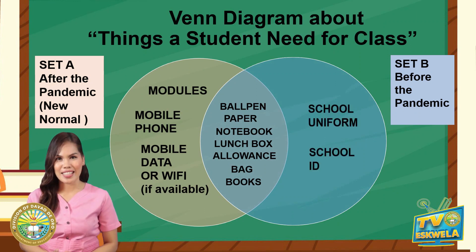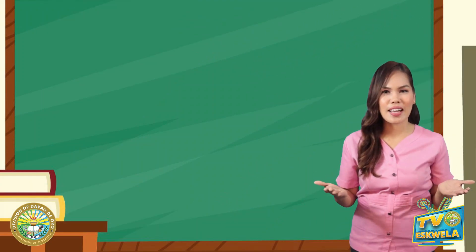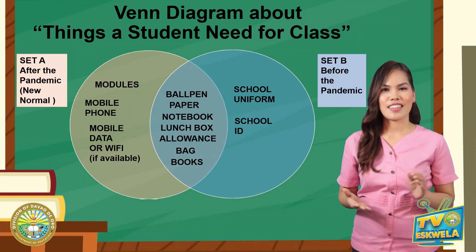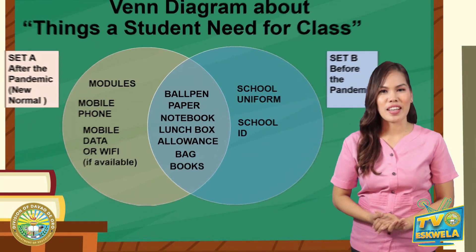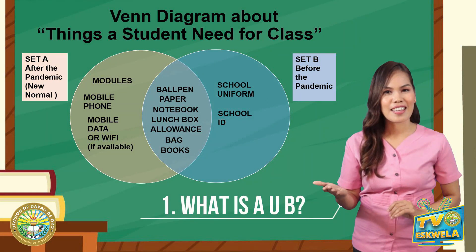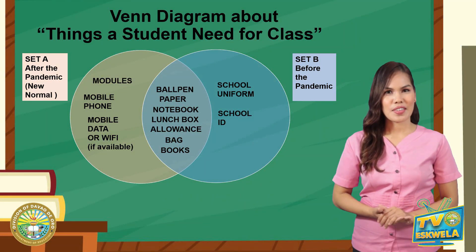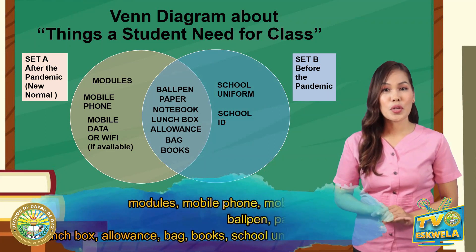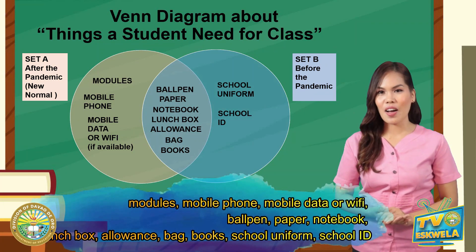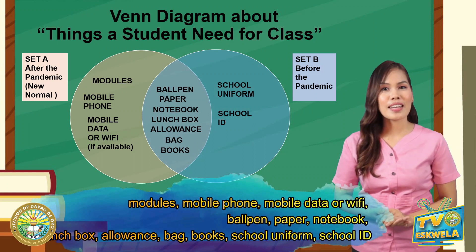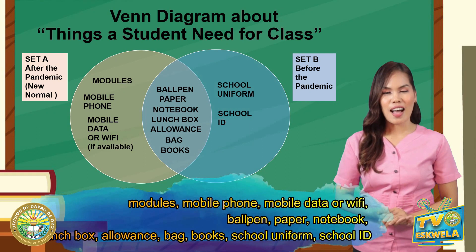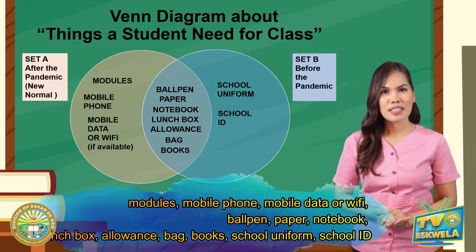By looking at the Venn Diagram, can you answer the following questions? First question: what is A union B? The answers are modules, mobile phone, mobile data or wi-fi, ball pen, paper, notebook, lunchbox, allowance, bag, books, school uniform, and school ID.